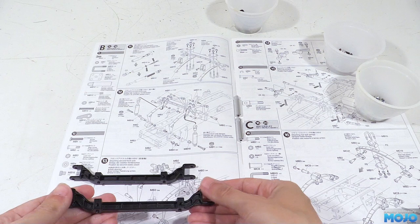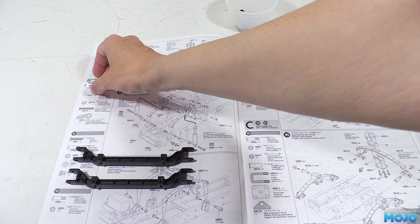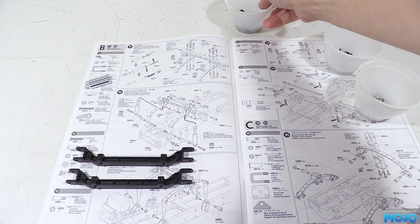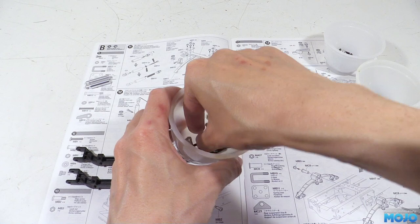Step 11, suspension bits. This is a make two scenario, so we'll build up one axle on video and magic up the other one when we need it. For this step we'll need the axles and the fake damper bodies. There's only two though, as the other front ones get made up later in the build.